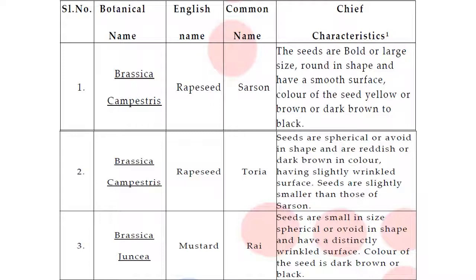The seed characters of different Brassica types: Brassica campestris (sarson type) seeds are bold or large, round in shape with smooth surface, yellow or brown to dark brown or black in color. Brassica campestris var. Toria seeds are spherical, reddish or dark brown in color, with slightly wrinkled surface, and slightly smaller than sarson. Brassica juncea (rai or Indian mustard) seeds are small, spherical to ovoid in shape, with distinctly wrinkled surface, dark brown or black in color.